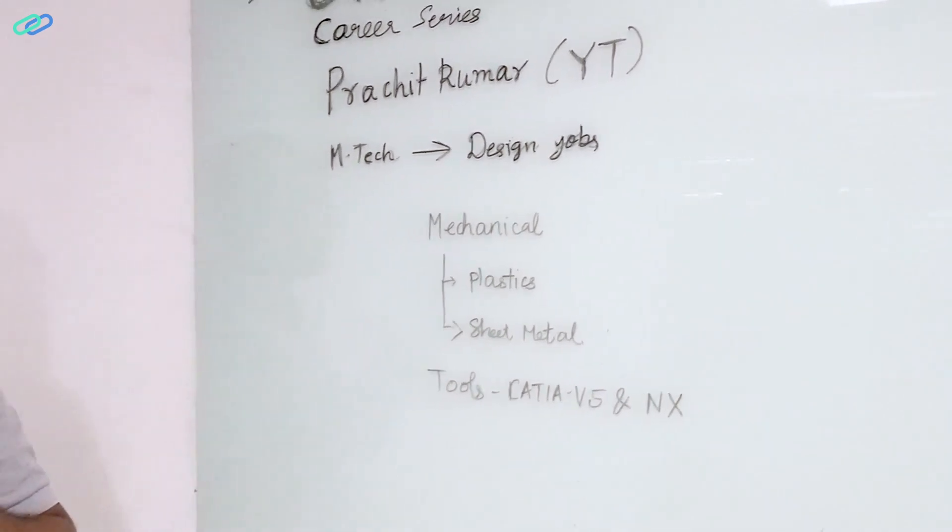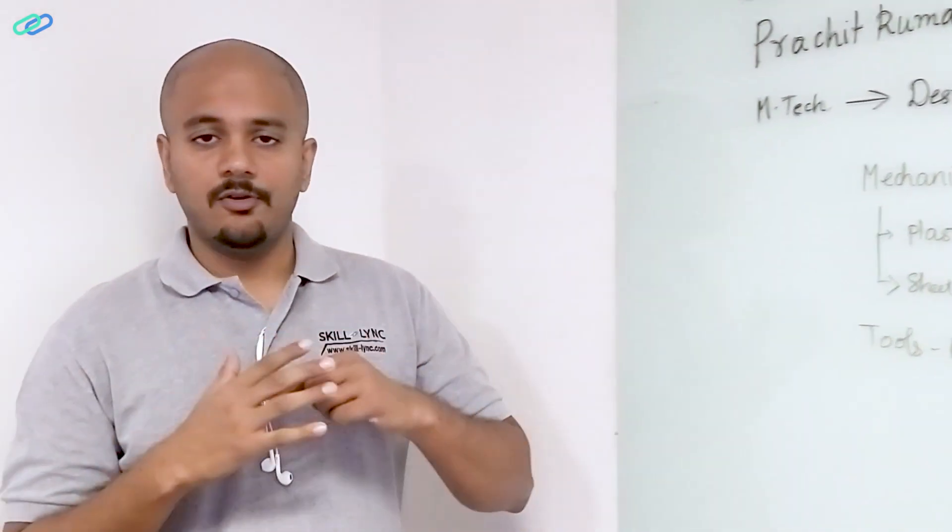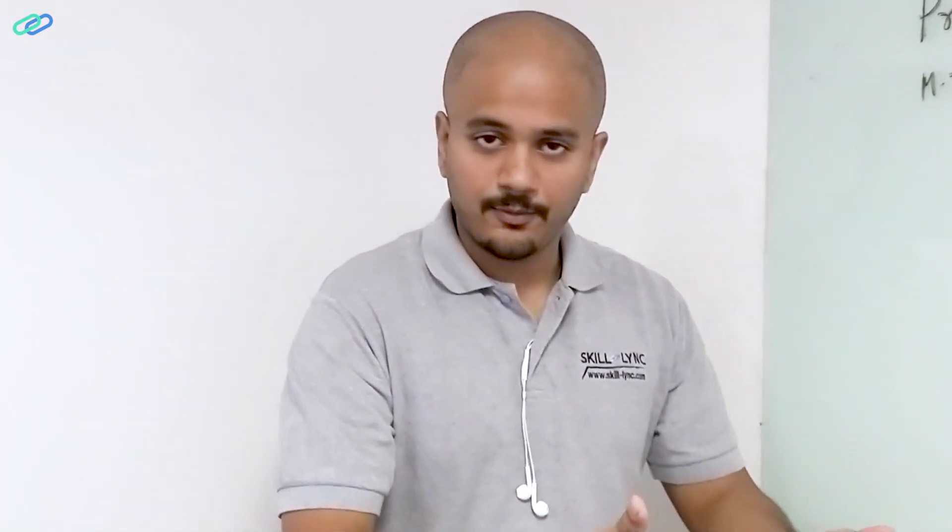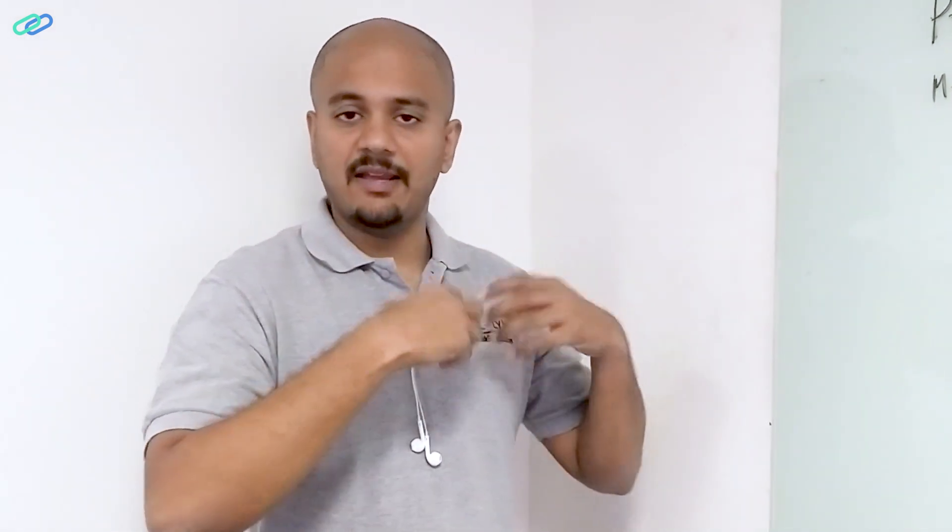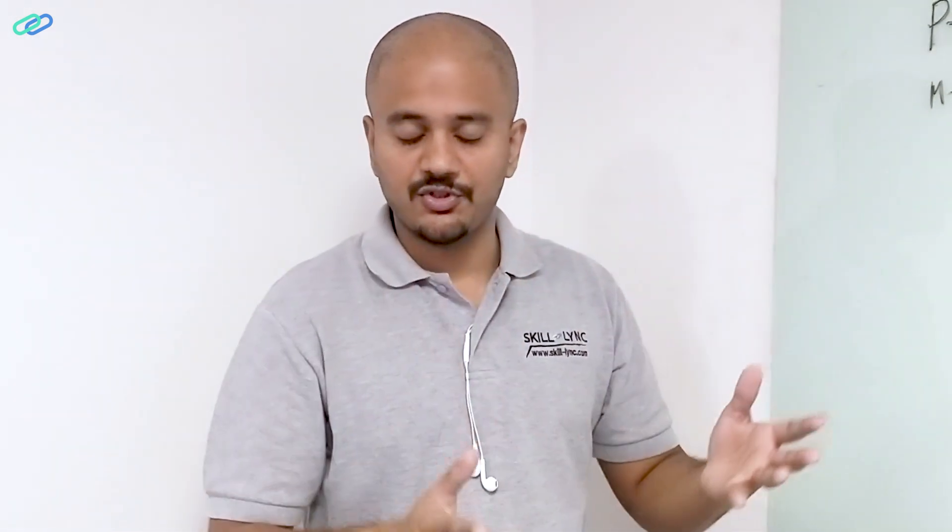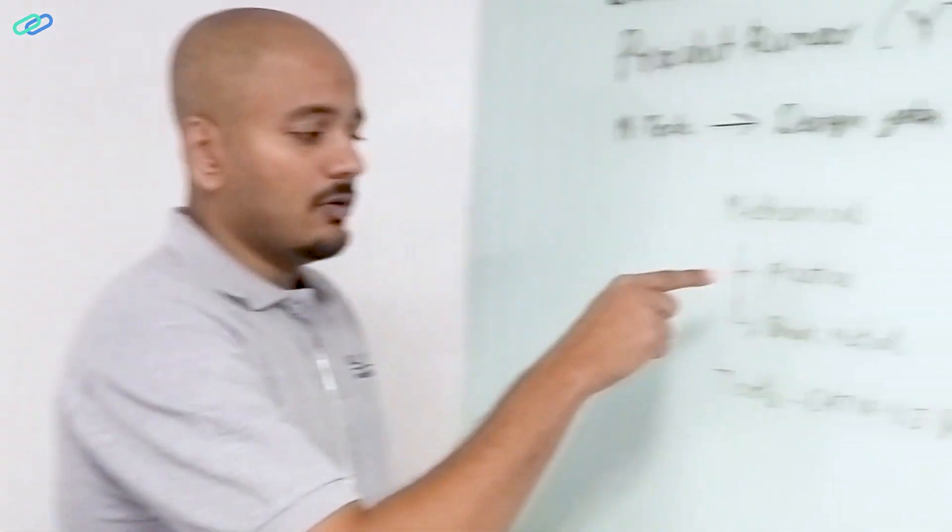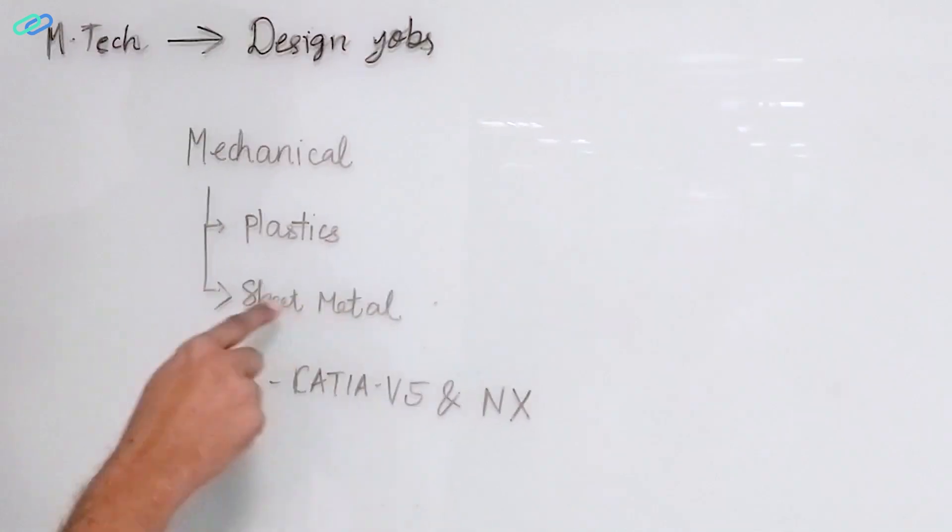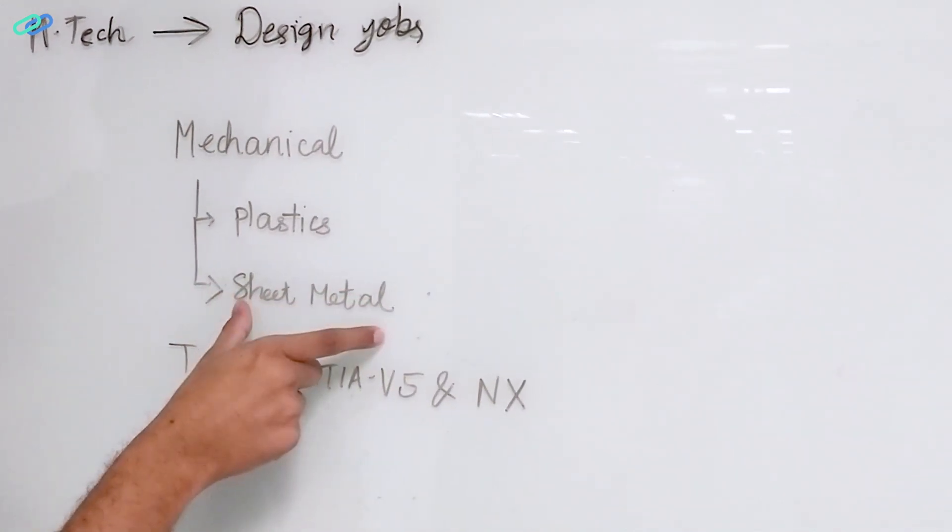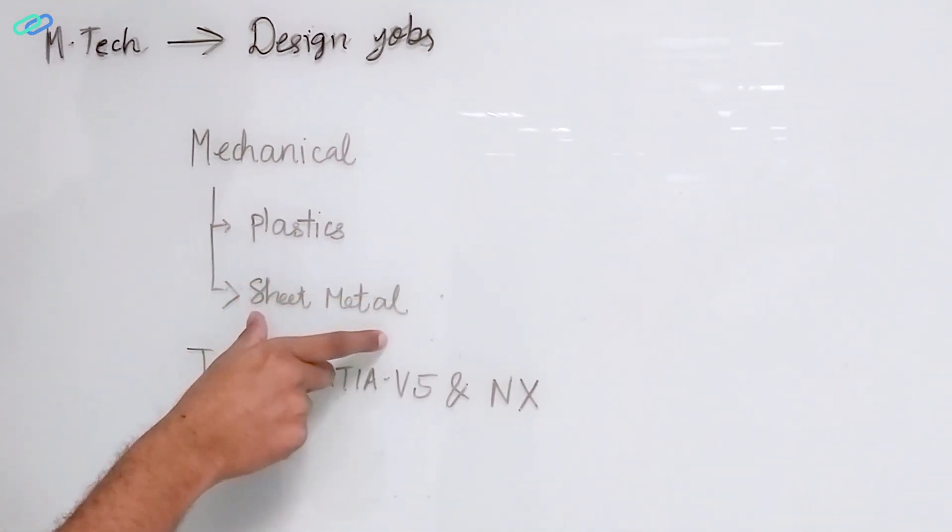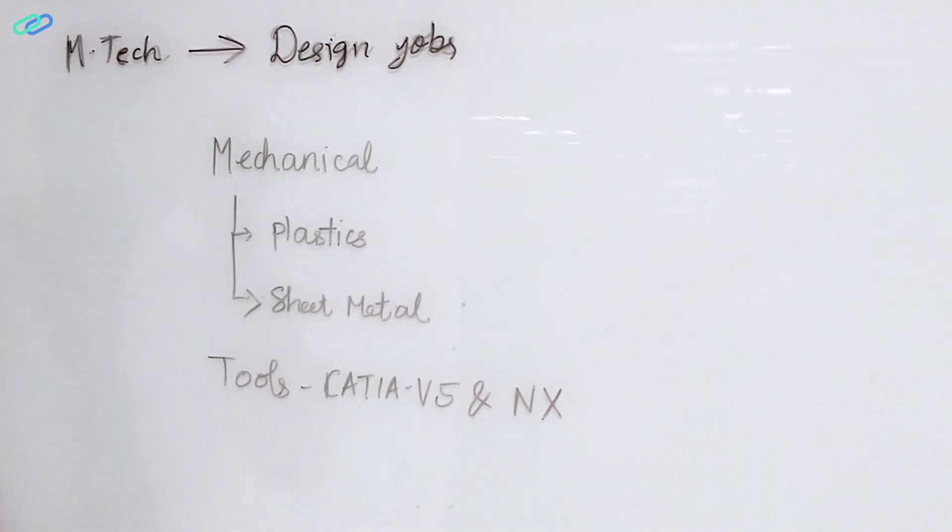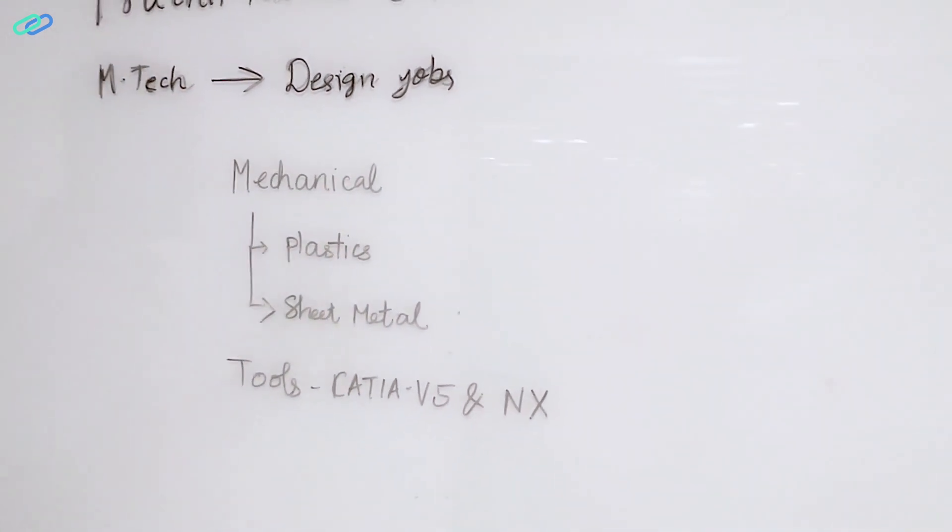So when the automotive company releases a new model, there's something called as a carryover program where you take the previous CAD models, which could be plastics or sheet metal, and then you make new changes to it based upon whatever requirement is. So plastics and sheet metal. So if you basically know how to design sheet metal or plastics, you can get a design related jobs in an automotive company.